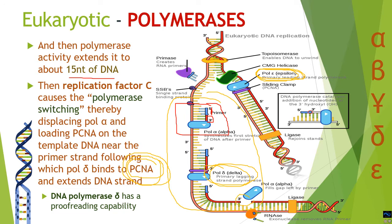Eventually, Okazaki fragments are produced and between the two Okazaki fragments there is a nick — a space not joined by phosphodiester bonds. This phosphodiester bond is later ligated by the ligase enzyme. Additionally, pol delta has a proofreading activity, as does pol epsilon — both pol epsilon and pol delta have proofreading activities.